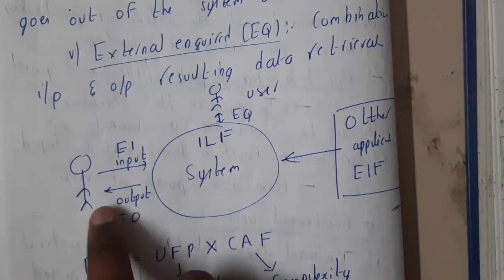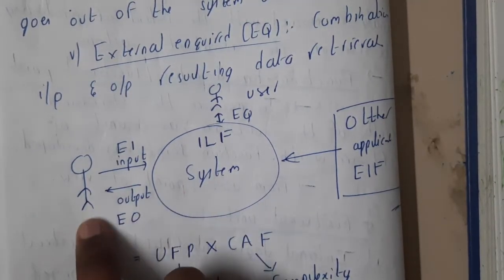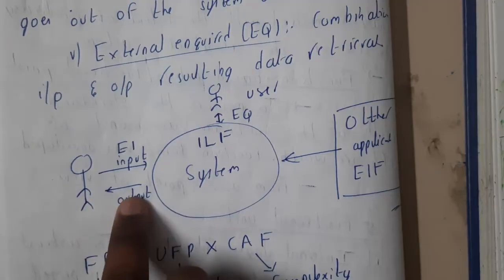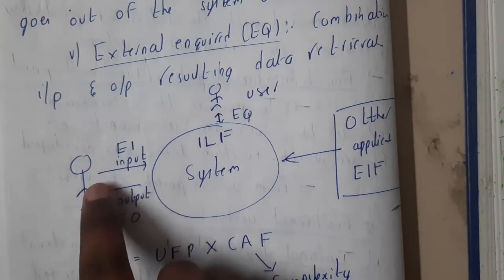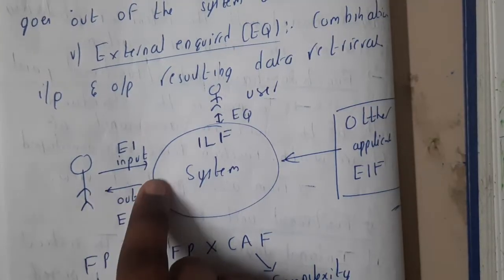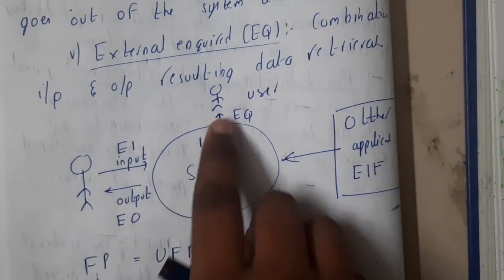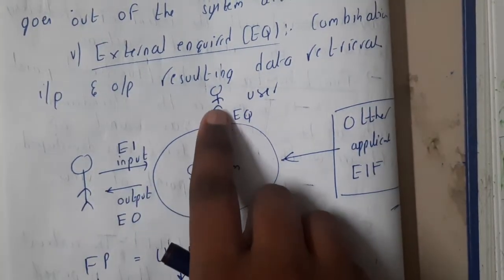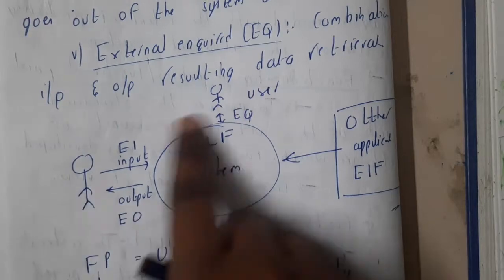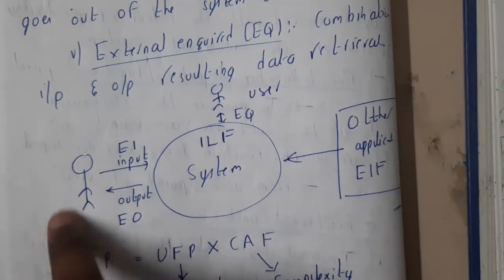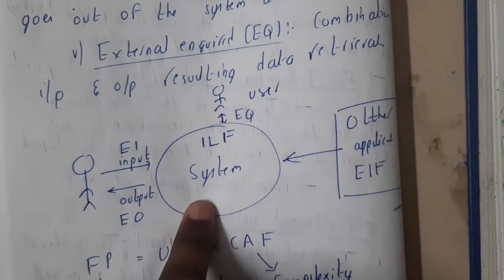If you draw a small diagram for an ILF system, it will look like this: you will be sending the output to a particular user or someone, and you will be taking the input from the user, and you will be querying the user. Basically we are assuming multiple users, so multiple operations can be done on them.